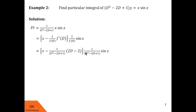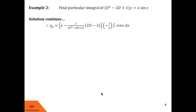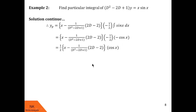Let us evaluate the inner part first. We replace D² by −a², where a = 1, so D² becomes −1. This −1 and +1 cancel, leaving 1/(−2D) of sin(x). Now 1/D means integration, so we evaluate the integral of sin(x), which is −cos(x). The two minuses become plus, so we take the 1/2 out and bring cos(x) inside the bracket. Now we operate 1/(D² − 2D + 1) on cos(x), replacing D² by −1 again, and −1 + 1 cancel, leaving 1/(−2D).